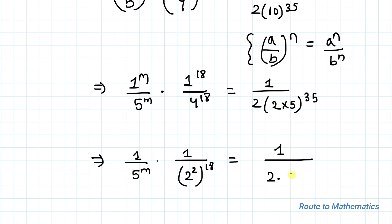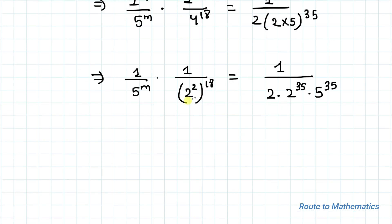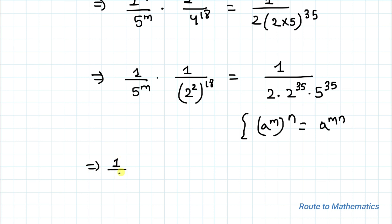The right side becomes 1/2 multiplied with 2 to the power 35 multiplied with 5 to the power 35. Now we apply the exponential rule: (a to the power m) to the power n equals a to the power m×n. Applying this rule, (2 squared) to the power 18 becomes 2 to the power 36.